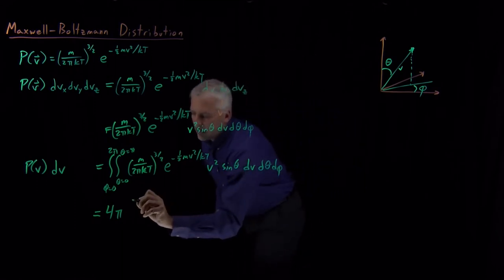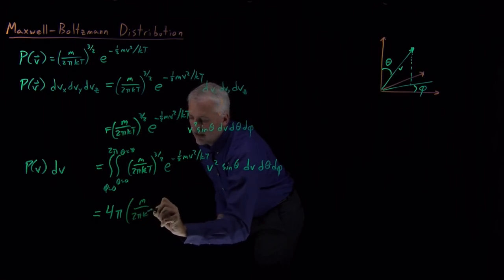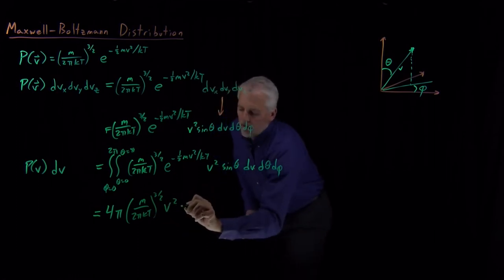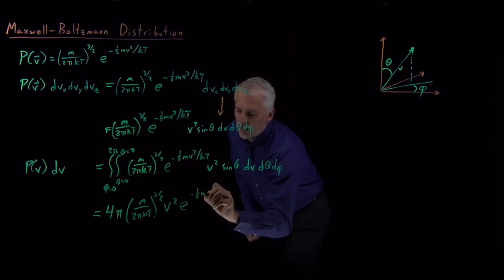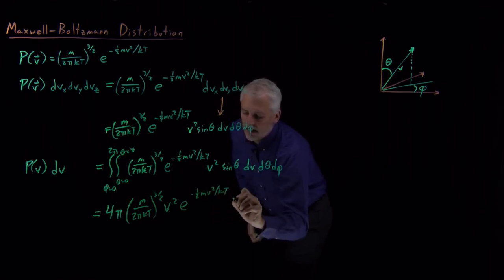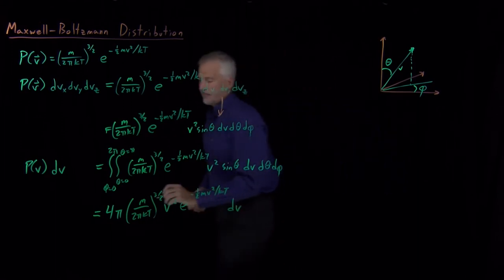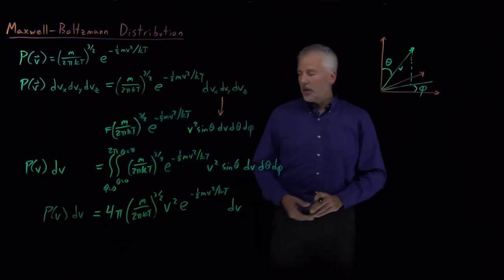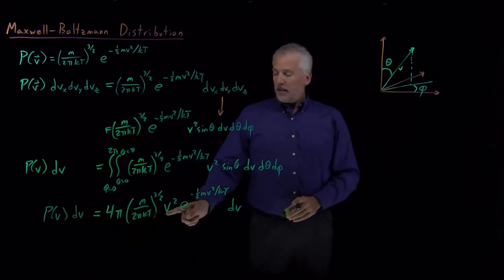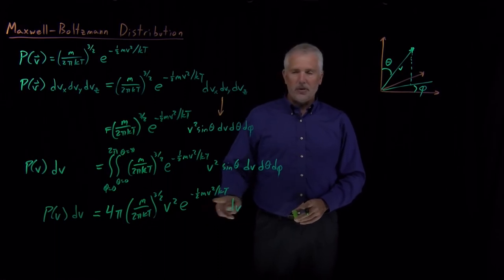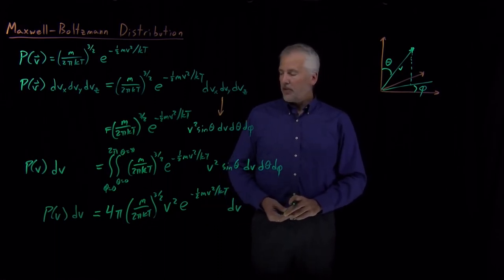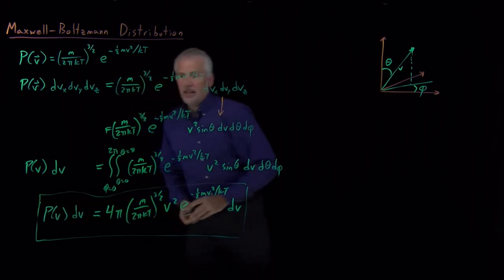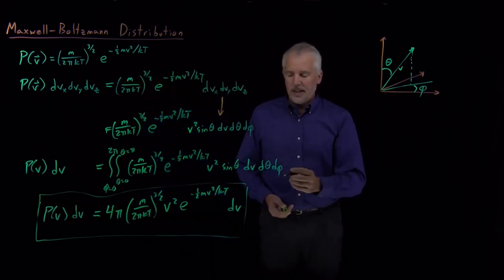What we have left after integrating away theta and phi is: m over 2πkT to the 3/2, multiplied by v² times e to the minus ½mv²/kT, times dv. So the probability of having a particular speed is some constants times v² times e to the minus v², with additional constants in the exponent. This is the probability distribution for molecular speeds rather than velocities.